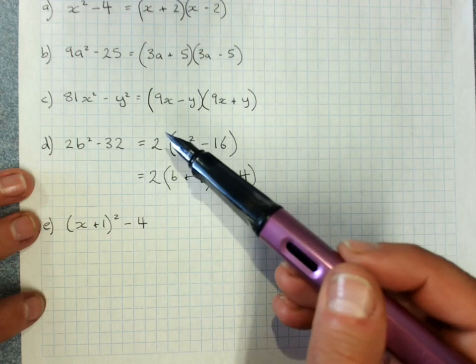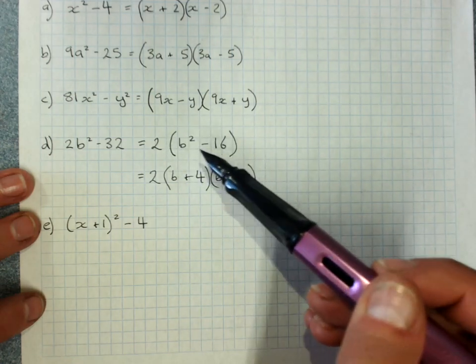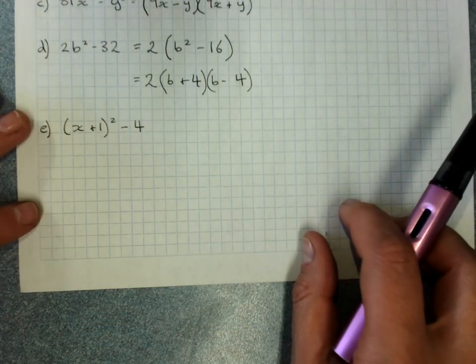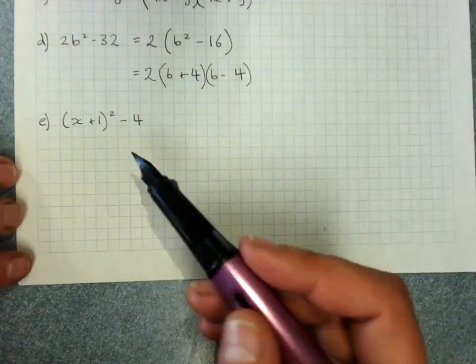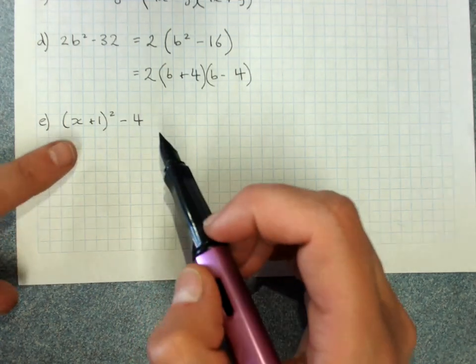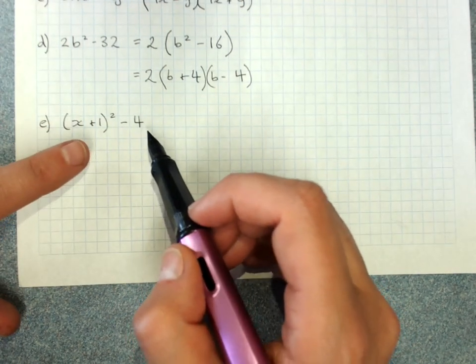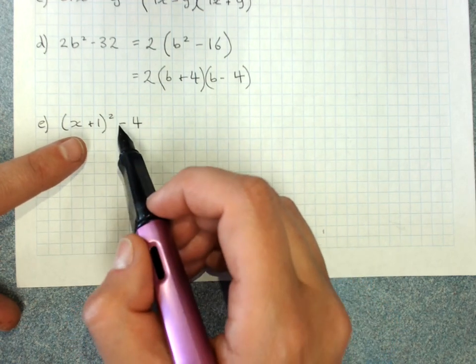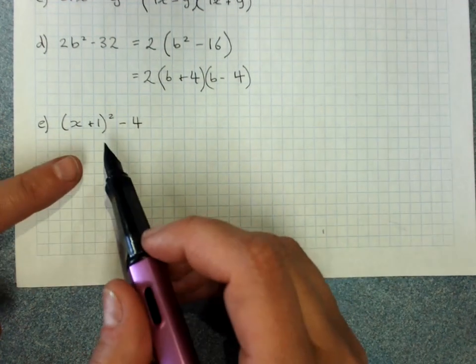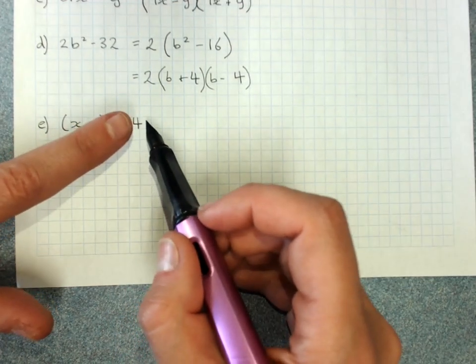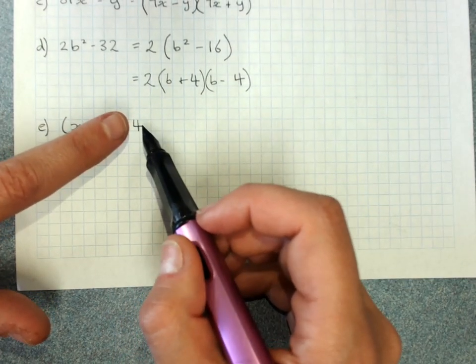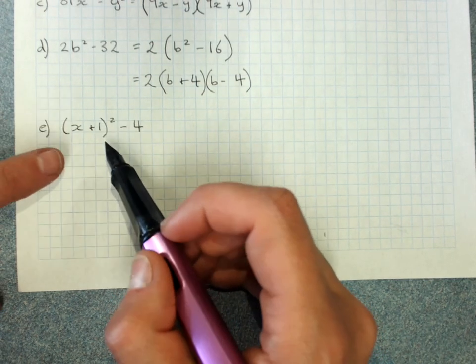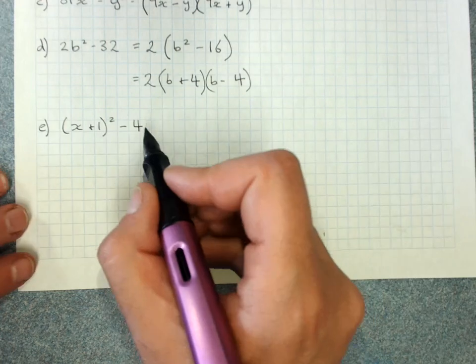So always have a bit of a look. If you've got one bracket left, check if you can further factorize it. Now this one looks a bit scary, but isn't. Two terms, if you see two terms, you should always be thinking difference of perfect squares. And if there's a minus, really think difference of perfect squares. Now this one's easy. That's a perfect square because it's two times two. This is a perfect square as well because it's x plus one squared. So that means that our first term in the brackets will be x plus one.